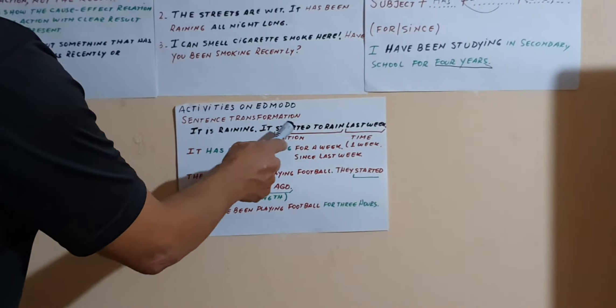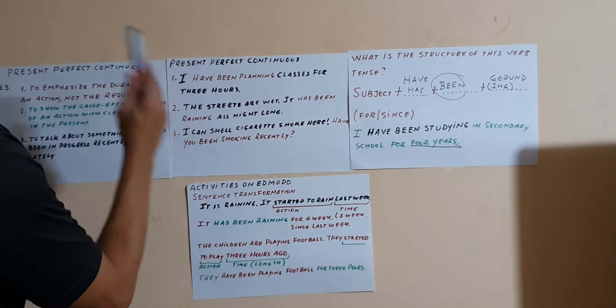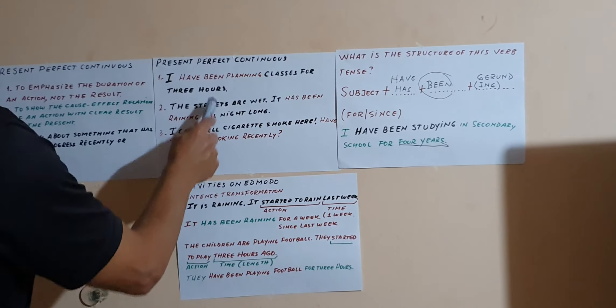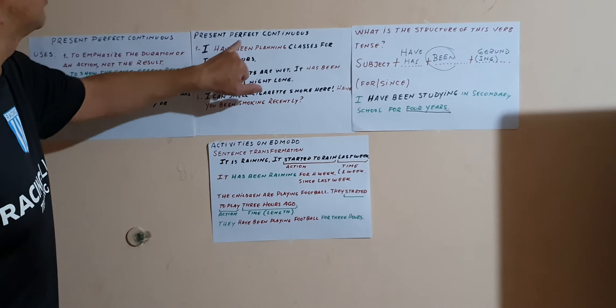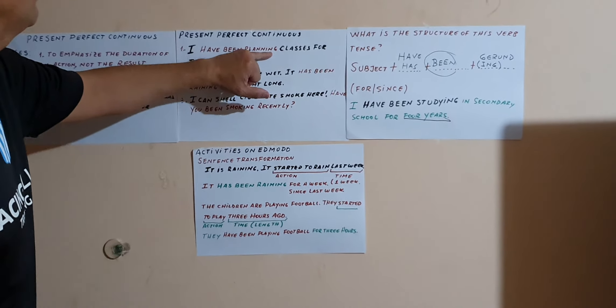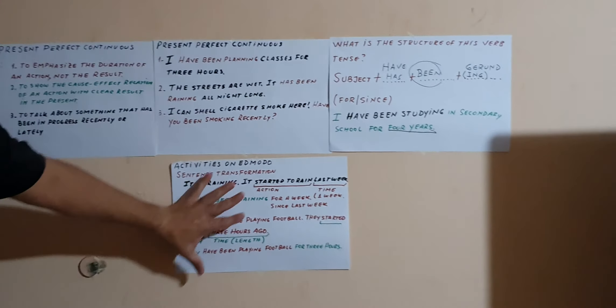Remember: been. Don't forget that in the present perfect continuous, after have or has, you have to use been and then the verb with -ing, the gerund.